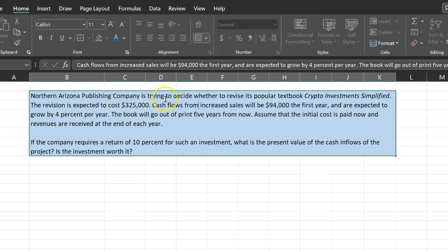So consider Northern Arizona Publishing Company. This is a company that's trying to decide whether to revise its popular textbook, Crypto Investments Simplified. That sounds like a book I'd like to read. The revision is expected to cost $325,000. Cash flows from increased sales will be $94,000 in the first year and then are expected to grow by 4% per year.